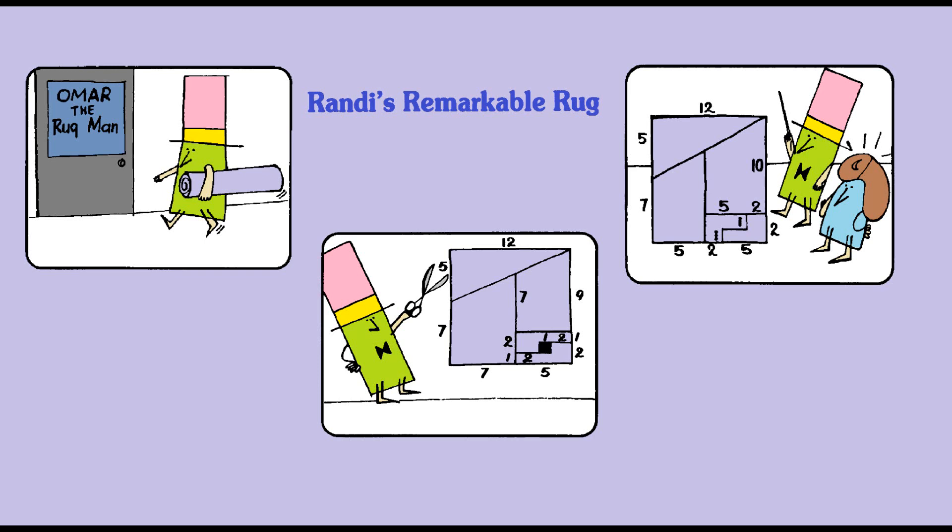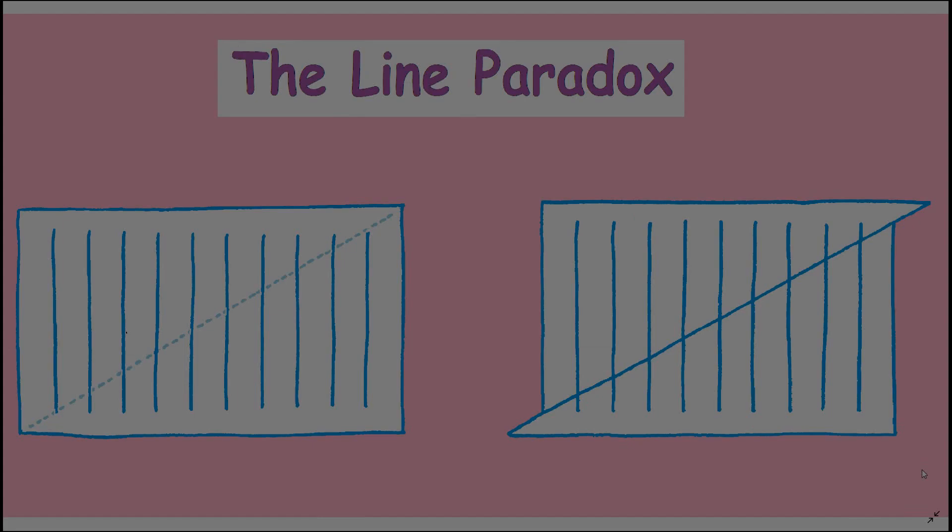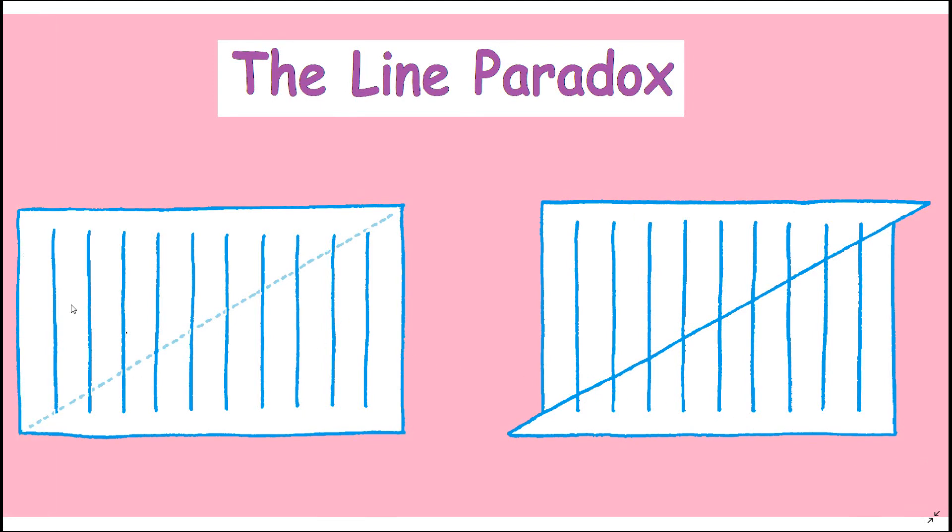Let's see how this principle works with help of another paradox. Note that ten vertical lines of equal length are so placed on the rectangle that if you follow the dotted diagonal from left to right, you find a progressive decrease in the length of the segments above the diagonal and a corresponding increase in the length of the segments below.